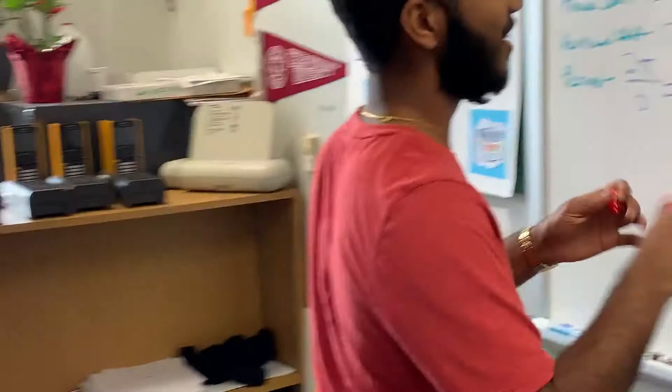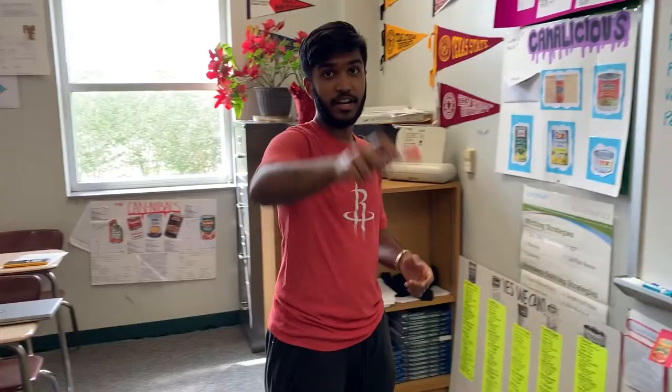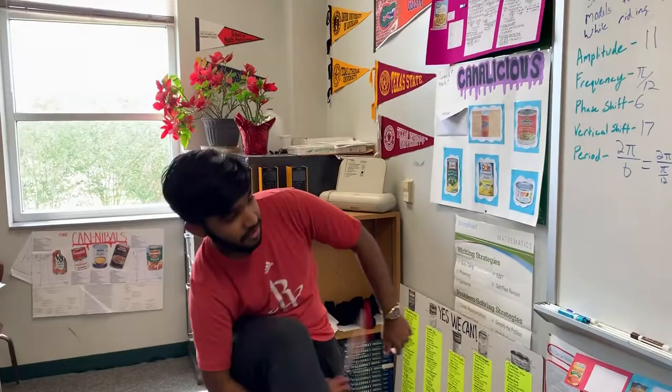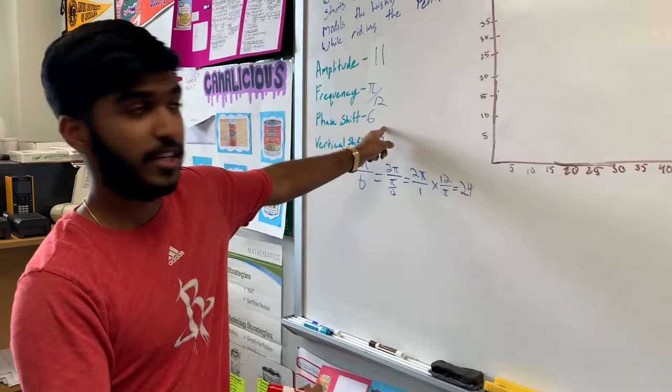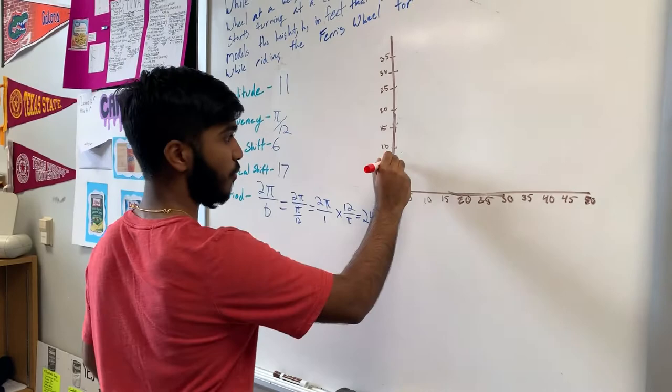Now we're going to start graphing. God. Alright, anyways, so, now we're going to start graphing. So since there's a phase shift of 6, we're going to shift the graph to the right, which means we're going to start at our minimum, which is 17 minus 11, which is 6. And after that, we're going to use a phase shift of 6 to go to the right. And now it's going to be our midline, which is 17. So right here.